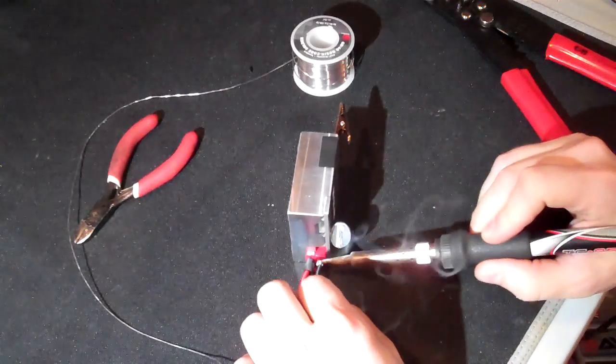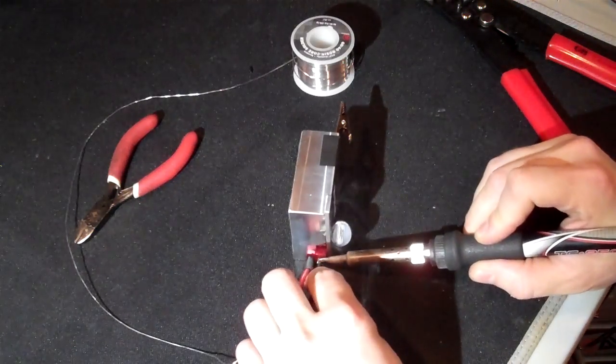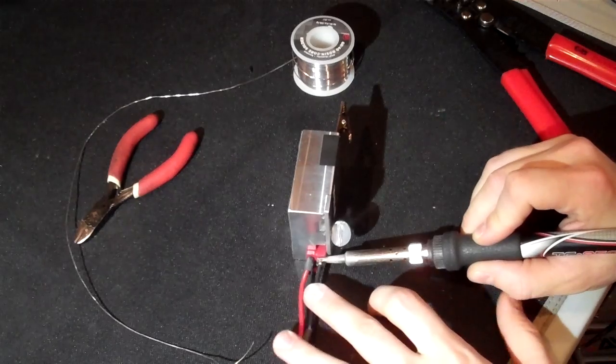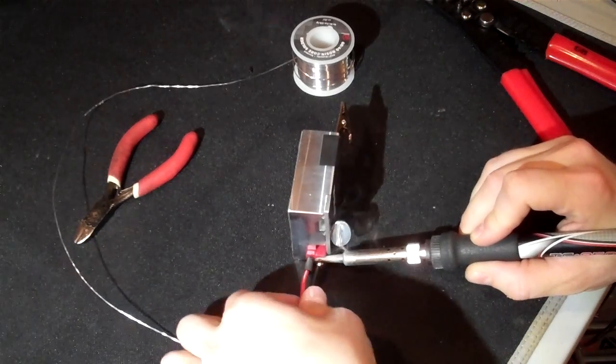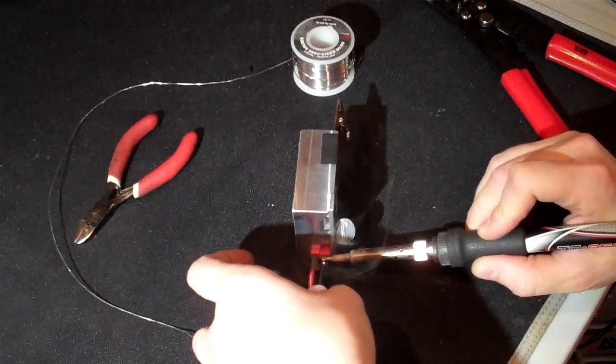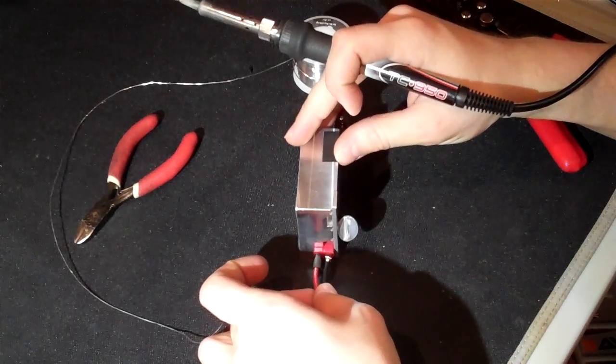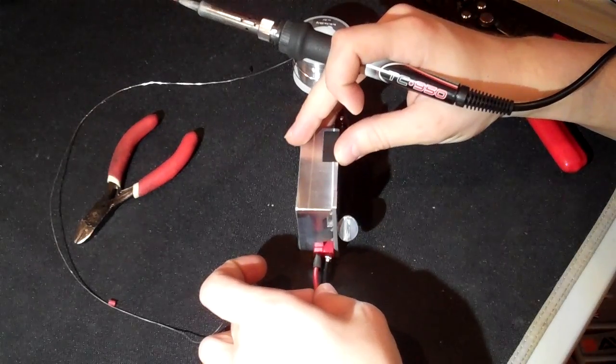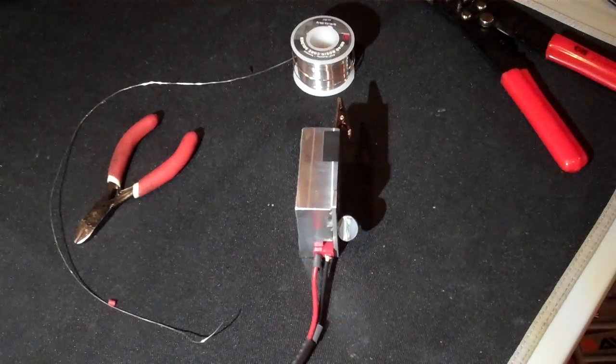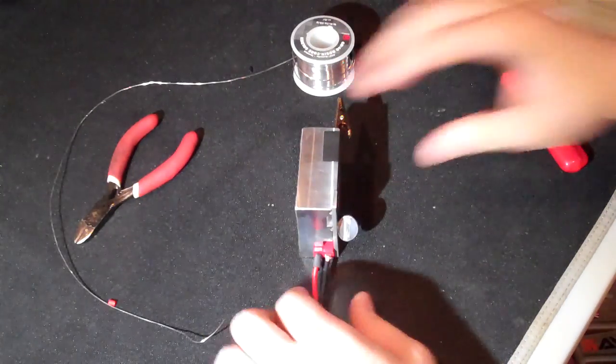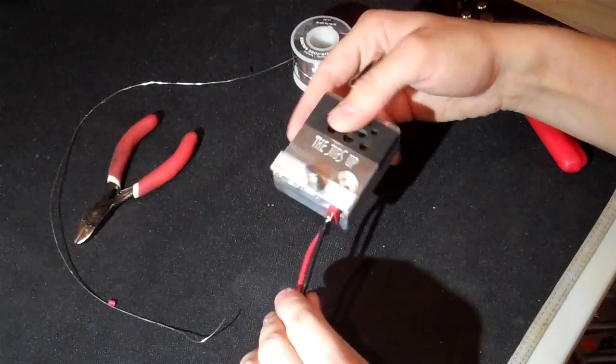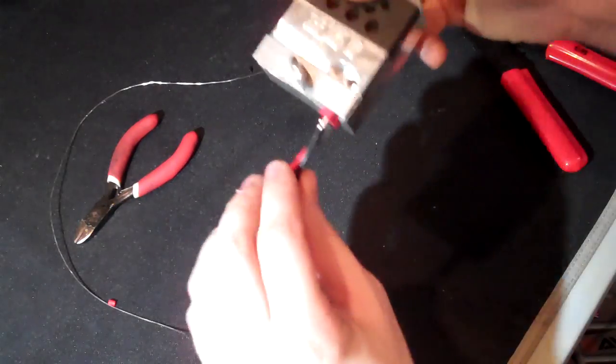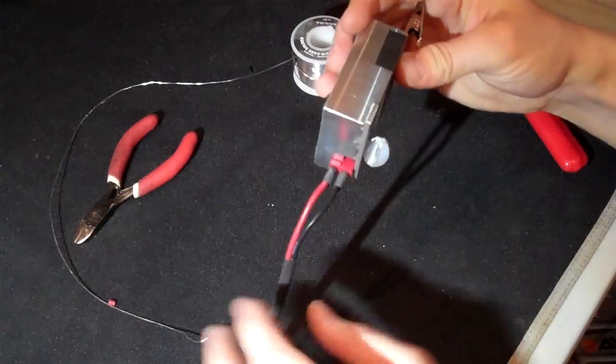Like so, touch the Dean's. There you go. Give it a little tug, nice and tight. You can see, pretty easy. Not too hard. Slide the heat shrink over.